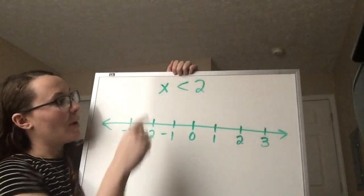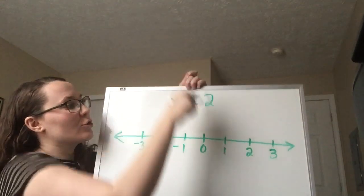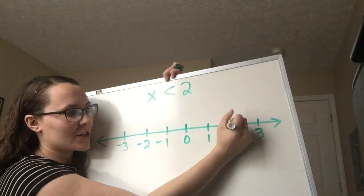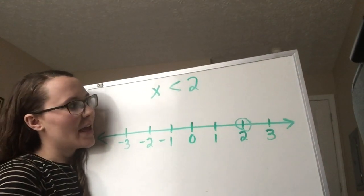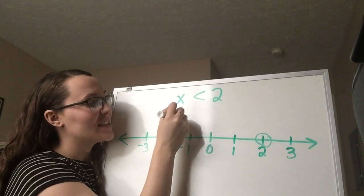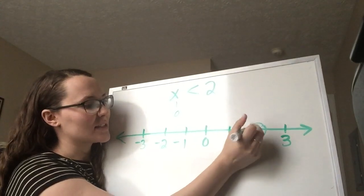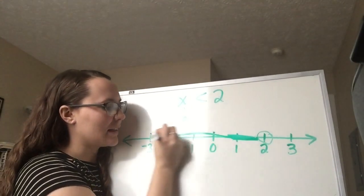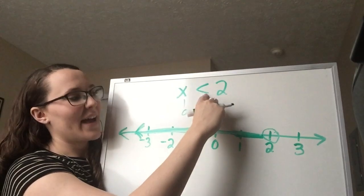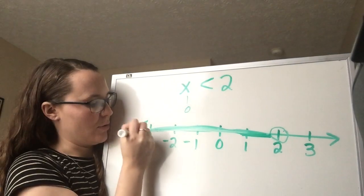Let's do another example: x is less than 2. Less than means 2 is not a solution, so we put an obnoxious open circle at 2 — a circle that is not filled in. Then, x is less than 2, so 1 and 0 are solutions, and they're on the left side of the number line. So we shade to the left. Since the variable is first, the arrow rule works too — the less than symbol looks like an arrow pointing left.